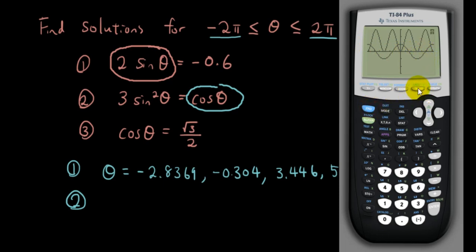So second trace, intersect, first curve, second curve, and then just go to where you think the intersection is, just about here. So the answer is negative 5.723.